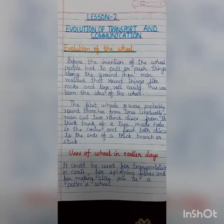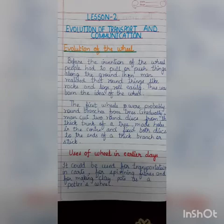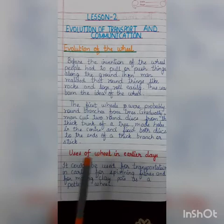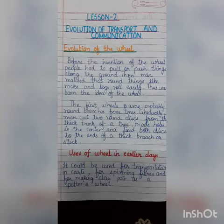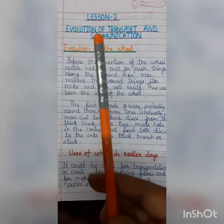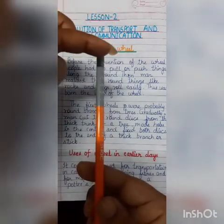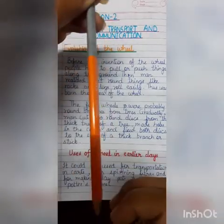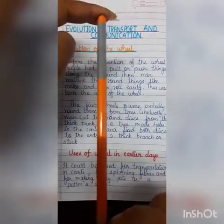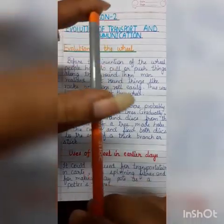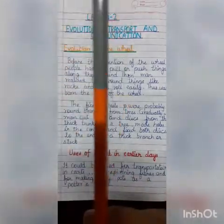The same design is used even today in modern vehicles. In all vehicles we can see wheels that are round in shape and have a hole at the center. The rod that joins the two wheels — one at each end — is called the axle.